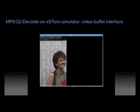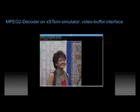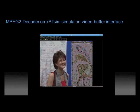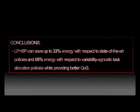Here is the output of the frame buffer during the simulation, resulting from the decoding of the video stream used as a benchmark. In conclusion, the proposed technique saves up to 33% energy with respect to state-of-the-art support policies, and 65% energy with respect to variability-agnostic task allocation policies, while providing better QoS. Thank you for watching.